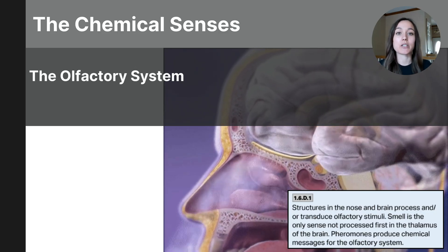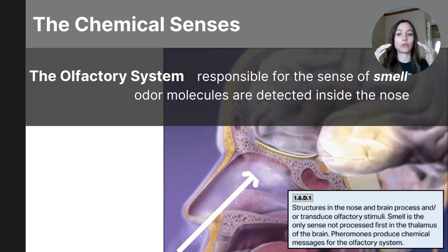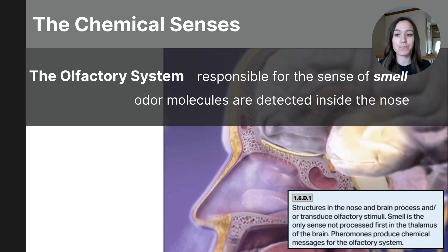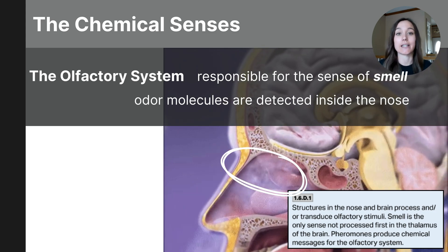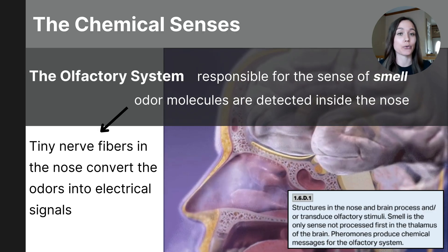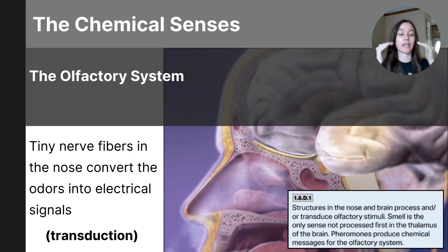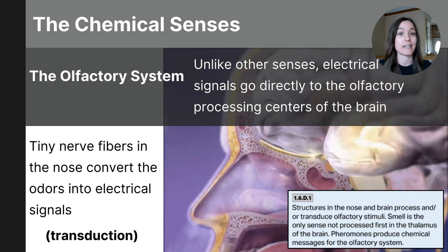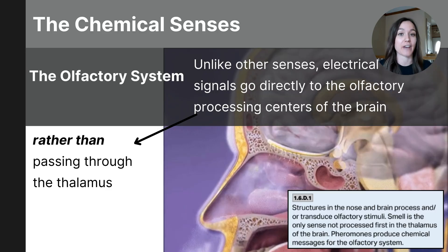The olfactory system is responsible for our sense of smell. This involves inhaling air through the nostrils where odor molecules enter the nasal cavity and dissolve in the mucus lining of the olfactory epithelium — a specialized tissue containing 20 million olfactory receptor neurons that detect these chemical molecules. They convert the chemical into an electrical signal through a process called transduction. These signals travel to the olfactory bulb, which sits just below the brain and above the nasal cavity, and then those messages are sent straight to the olfactory cortex in the limbic system. This is the only sensation that bypasses the thalamus for faster processing.